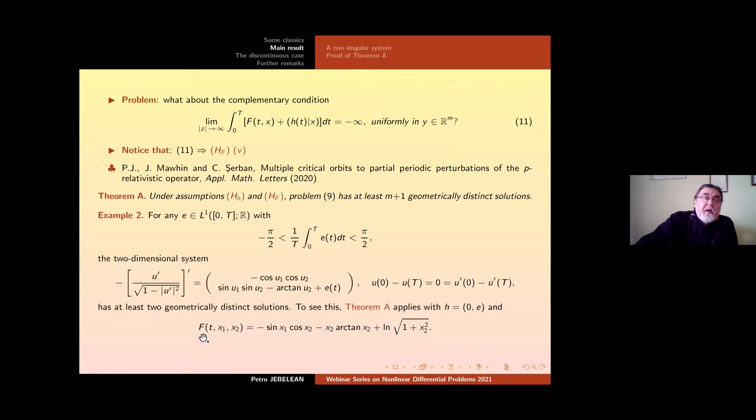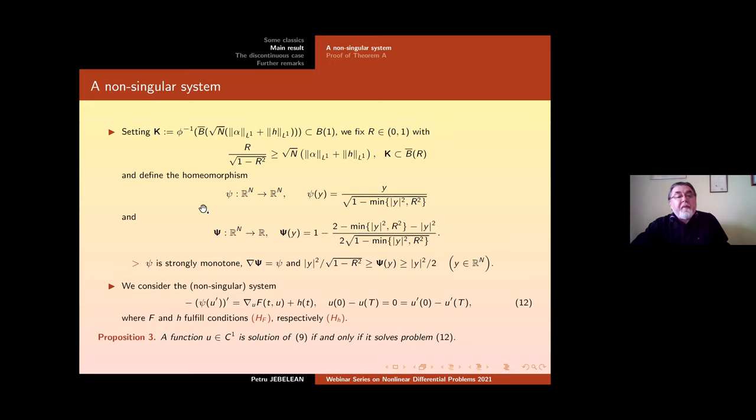And to see this, our Theorem A here applies with this choice of H zero here and the potential F capital F of t,x_1,x_2 like here. We see this is periodic only with respect to x_1, not x_2. That's why we have only two geometrically distinct solutions.